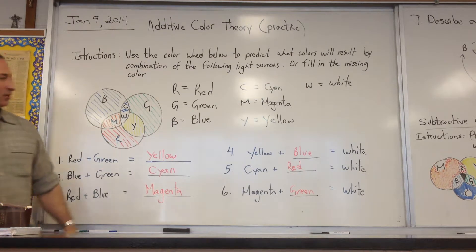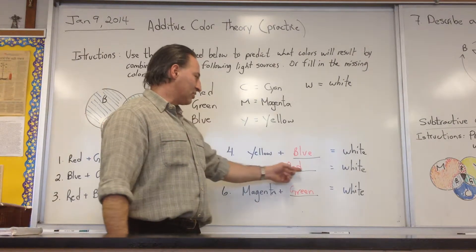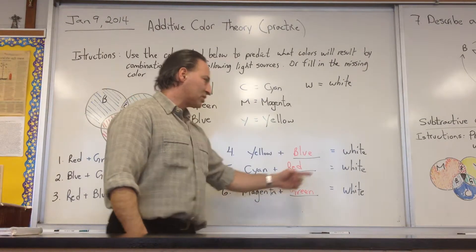That's what we answered over here. You see that yellow plus blue gives you white, cyan plus red gives you white, and magenta plus green gives you white.